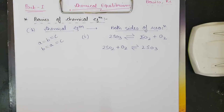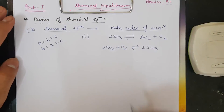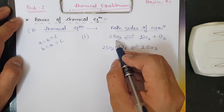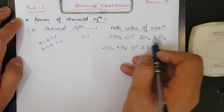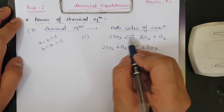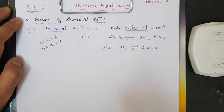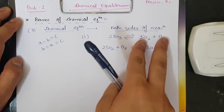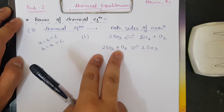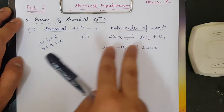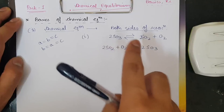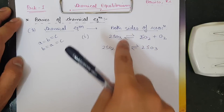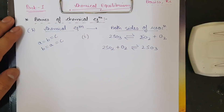This is shown with the example of SO₃, which goes into SO₂ plus O₂. The equilibrium arrow is written in this direction. Similarly, in the reverse direction — SO₂ plus O₂ going into SO₃ — the arrow remains the same and these two have to be in equilibrium.